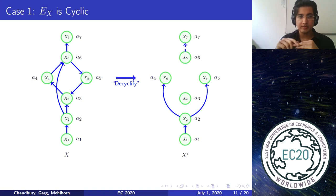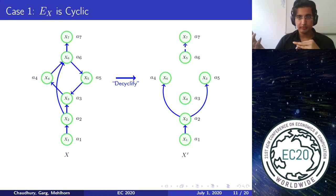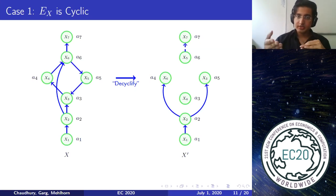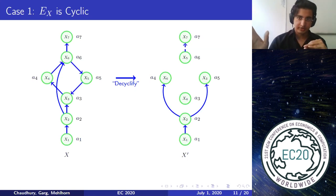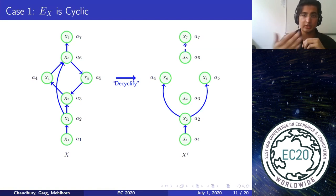We do the intuitive thing: as you can see in the envy graph, there is a cycle among agents 3, 4, 6, and 5. We exchange the bundles along the cycle. As a result, every agent along the cycle gets strictly better off, and agents outside the cycle retain their previous bundles. I claim that if the previous allocation X was EFX, then X' is also EFX.